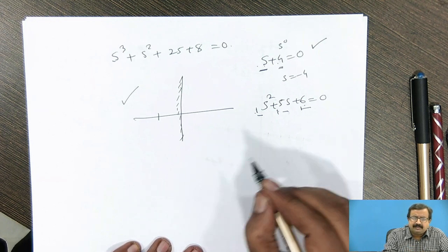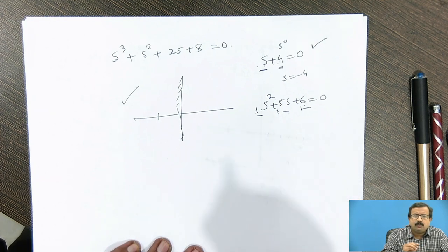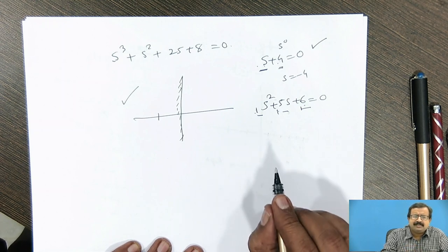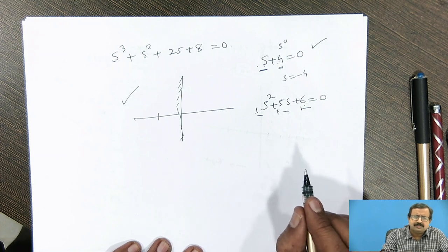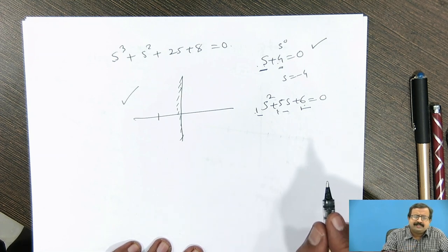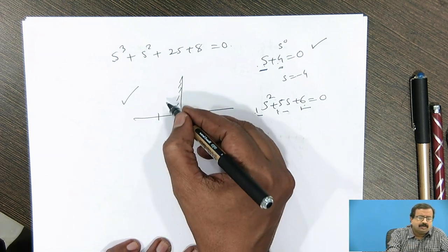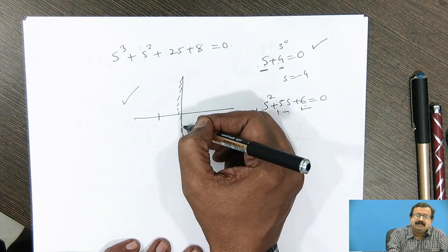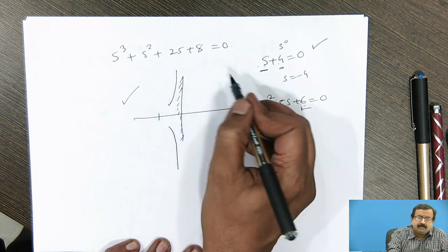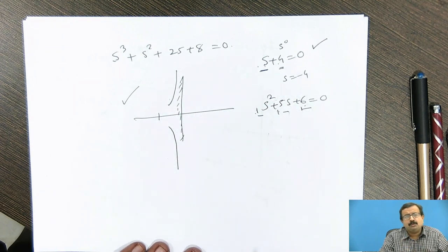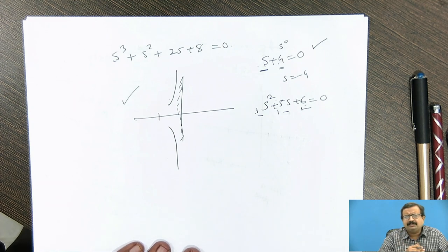Guaranteed stability has another name: asymptotically stable. Asymptotic stability means the root locus will not cross the imaginary axis — it will stay on the left side and never cross to the right side. That is called asymptotic stability, and such a system is always better because we know it will not become unstable or marginally stable.